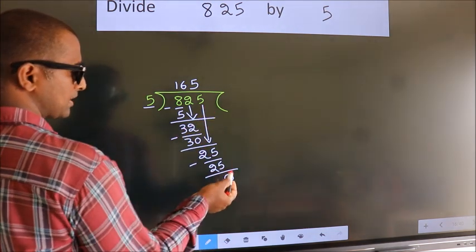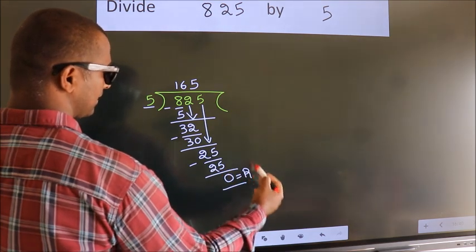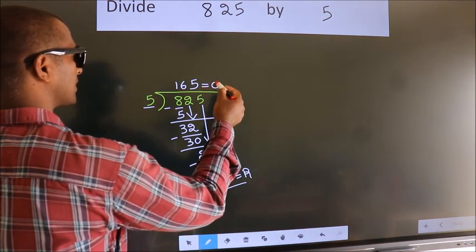No more numbers to bring it down. So, we stop here. This is our remainder. This is our quotient.